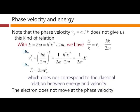So the electron simply does not move at the phase velocity of the wave. The electron moves at the group velocity.